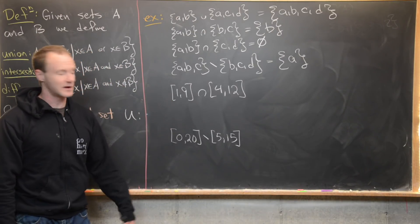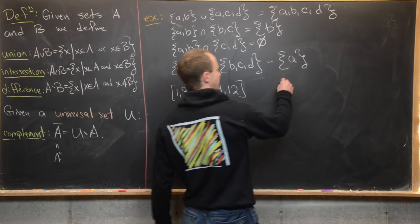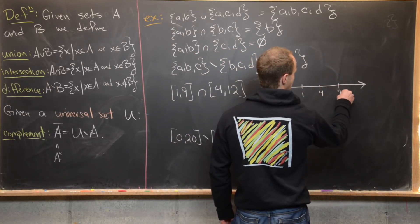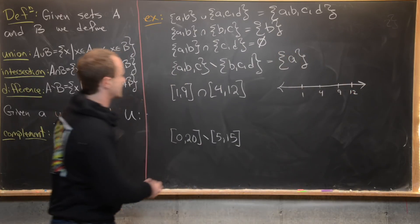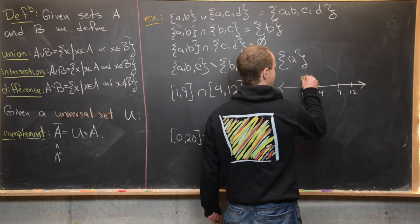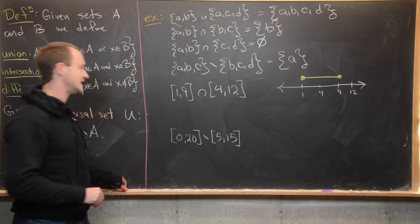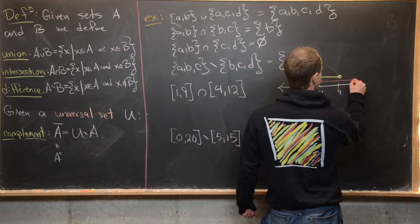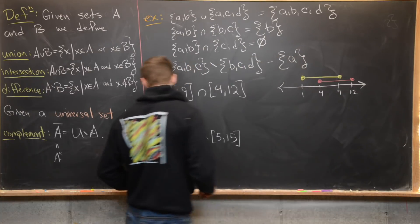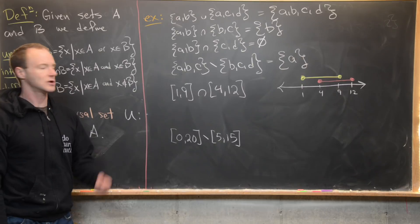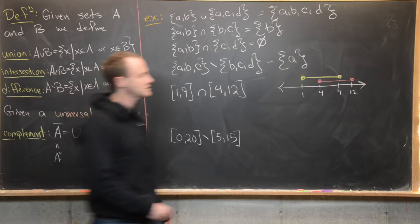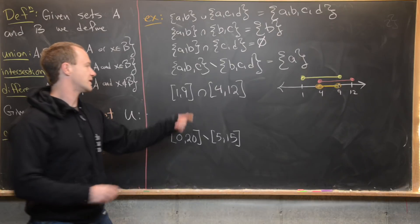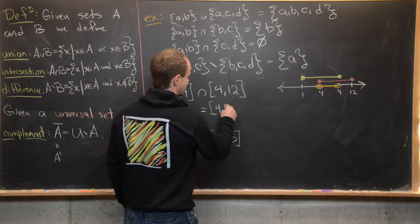Now let's look at two sets of real numbers: the closed interval [1, 9] and the closed interval [4, 12]. Putting these on a number line with key points 1, 4, 9, 12, the interval [1, 9] sits above and [4, 12] below. To intersect them, we look for where the two intervals overlap — that's from 4 to 9, including both endpoints. So [1,9] ∩ [4,12] = [4, 9].